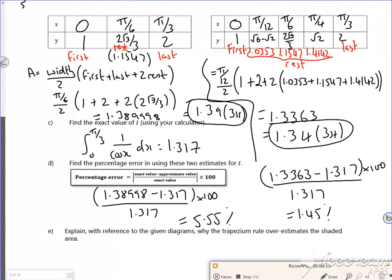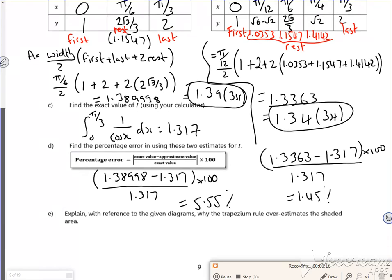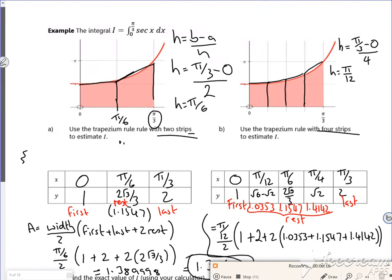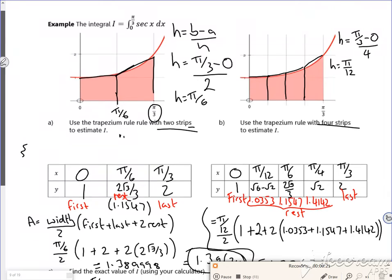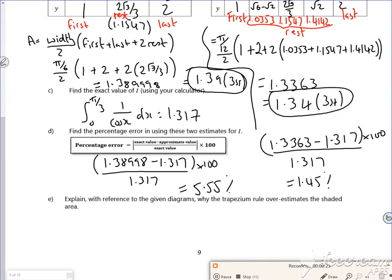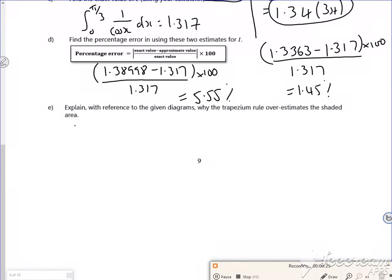Right so I'm on the last little bit from this question, it says explain with reference to the diagrams. So if you look, what they want is for you to say that the top of the trapezium is either above or below the curve. So the top of the trapezium is above the curve, so it's an overestimation.